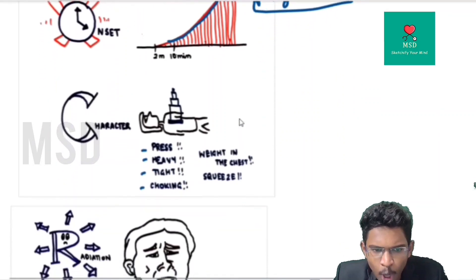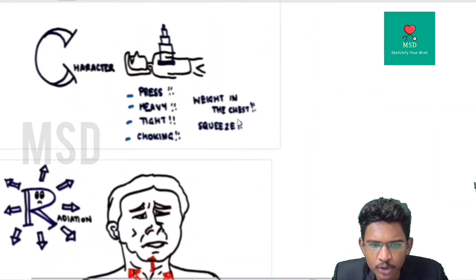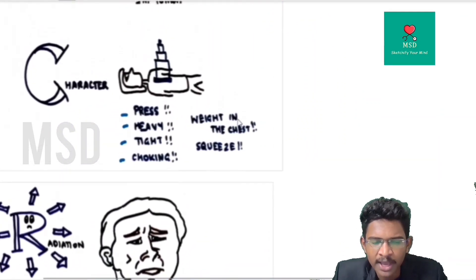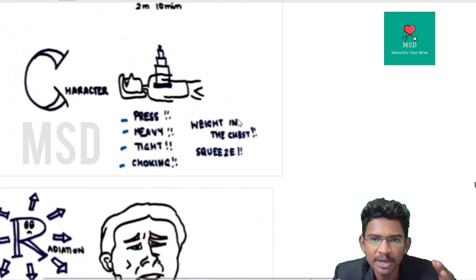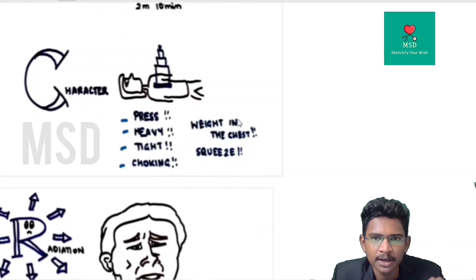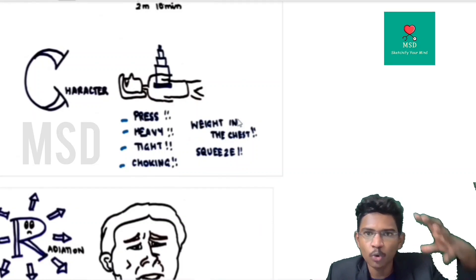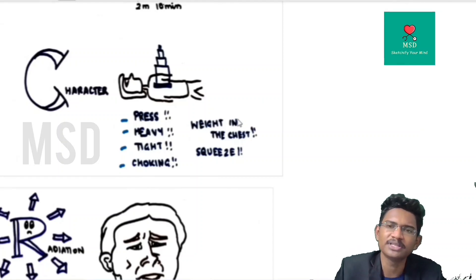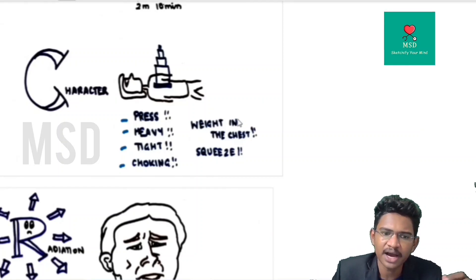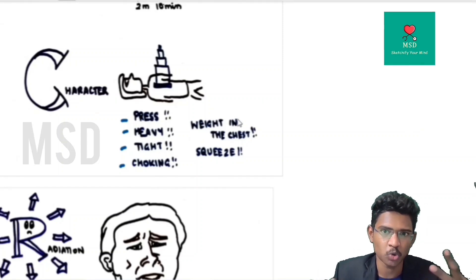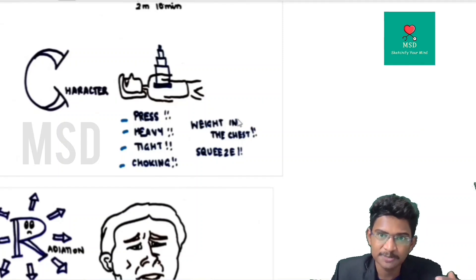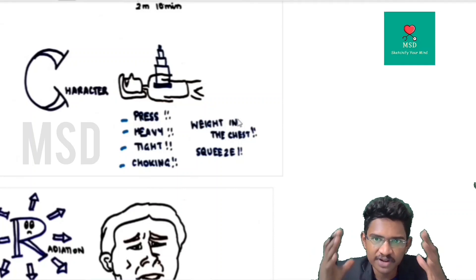The character of pain in acute coronary syndrome: most patients won't describe it as pain. Instead, they say there is a heaviness over the chest — 'some weight is kept over my chest, I can't breathe' — it is tight, choking, or pressing in nature. Most patients will complain of this.